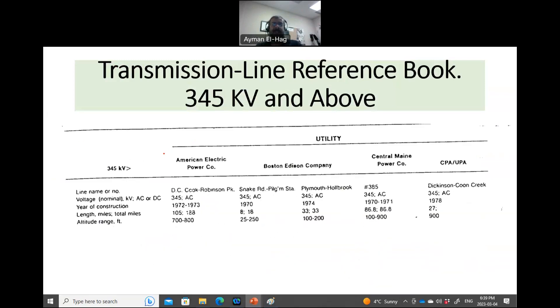So, for example, it starts with the utility. These are the names of the utility companies. And here's some very general information for towers or overhead lines working at 345 kV. And in the book, there are details about 500 kV and 765 kV as well. But, of course, because of the time limit, I will just talk about a few examples from 345 kV. This is the line name. Now, the voltage is 345 kV, and it's an AC system. And here's some information about the length and when this line was constructed.